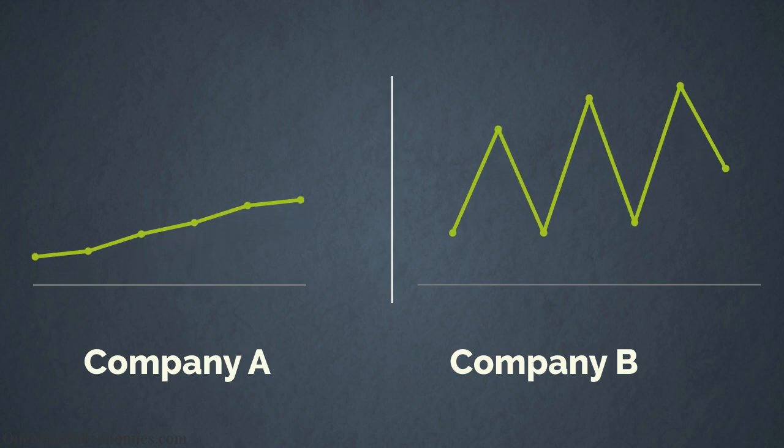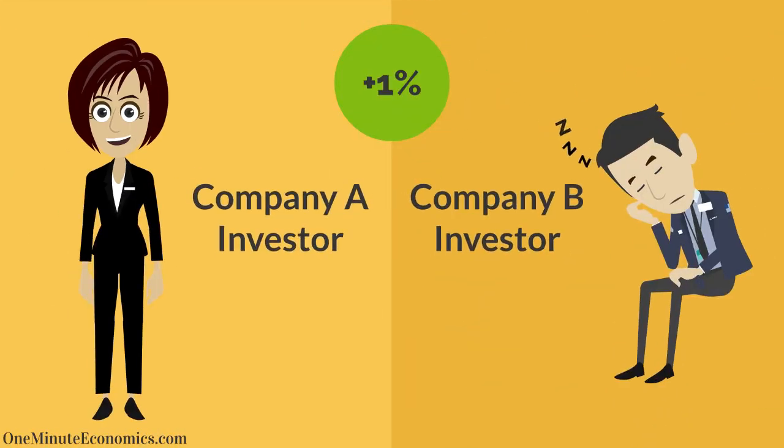As can be seen, Company B share prices fluctuate a lot more aggressively, and we therefore say Company B shares are more volatile. A 1% daily price movement would be considered exciting by Company A standards, whereas Company B investors would find it boring.